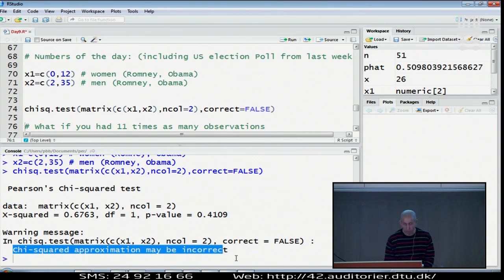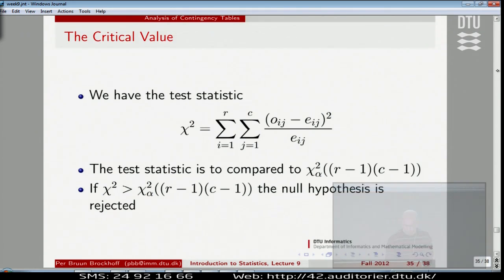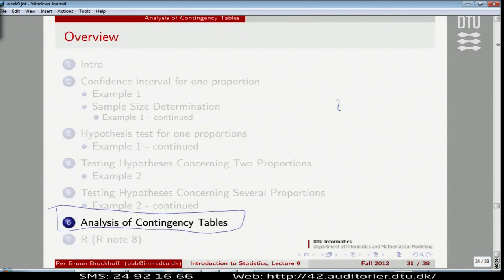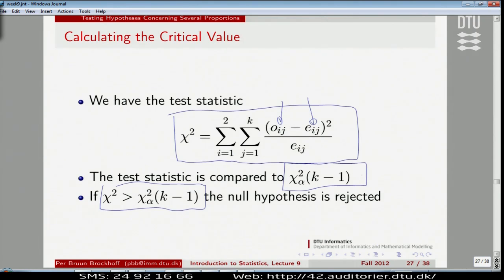Why does it give me this warning? There is something I forgot to tell you - a really important assumption for these tests to be okay. The assumption is all expected values should be at least five, not the observed, the expected values. If that's not the case, the chi-square approximation fails. That's why we get a warning. We shouldn't believe the p-value.